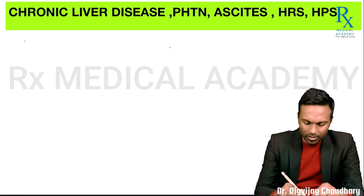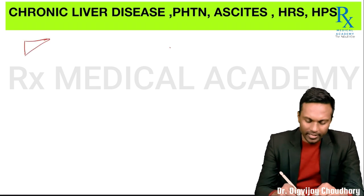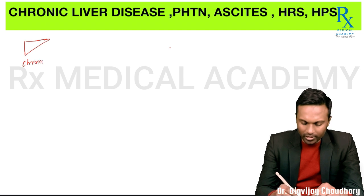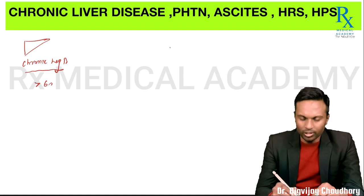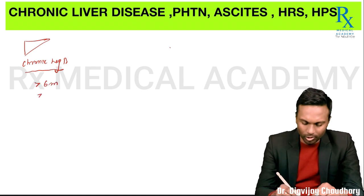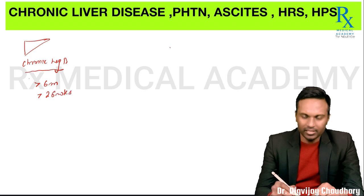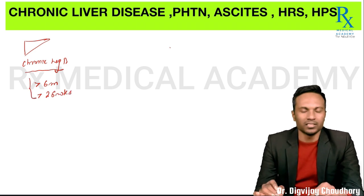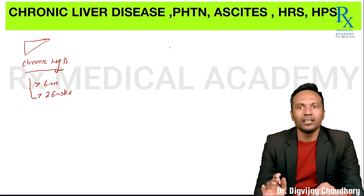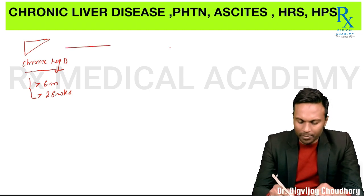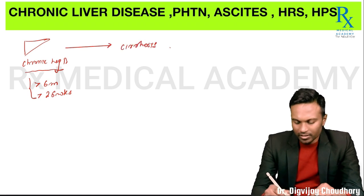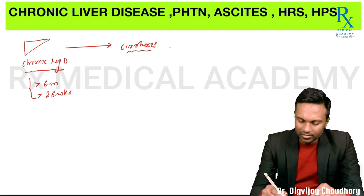Suppose a person is suffering from chronic hepatitis — take the example of chronic hepatitis B. Chronic hepatitis means disease lasting for at least more than six months, or more than 26 weeks. You will classify it under acute hepatitis or sub-acute hepatitis. Chronicity is basically any liver disease of more than six months.